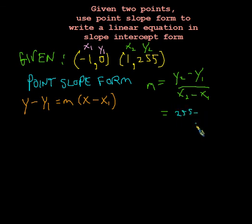That'll make it easier to fill this in and actually calculate the slope. So that'll be 255 minus 0—that's easy—and 1 minus negative 1, which is like 1 plus 1. So we end up getting 255/2.